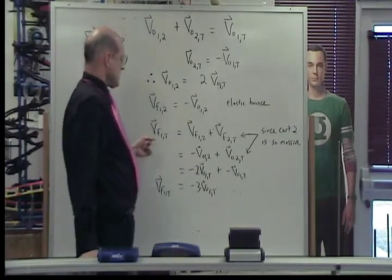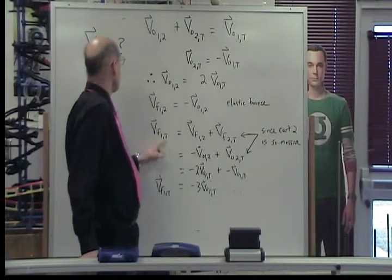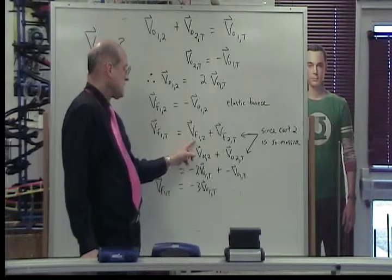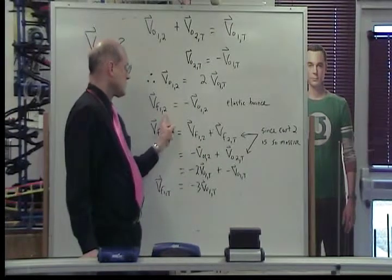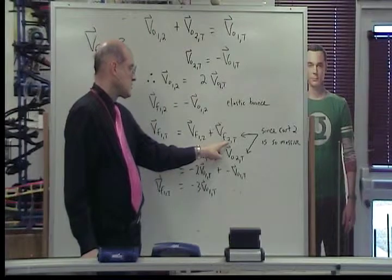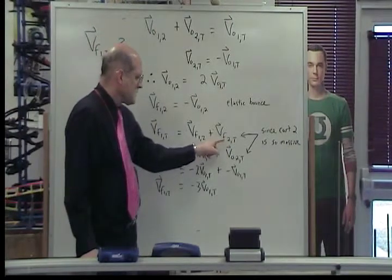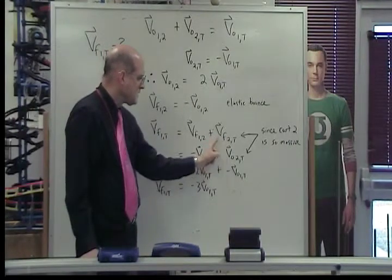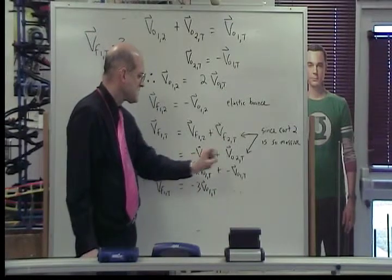Now, we can also relate the final velocity of card 1 to the track. In fact that's our unknown, the final velocity of card 1 relative to the track. Since card 2 is so massive, its velocity will hardly change in the collision, so that's how I get from this step to this step.